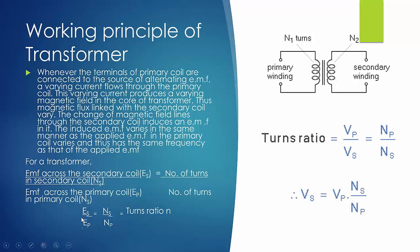For a transformer, the voltage in the secondary divided by the voltage in the primary is equal to the number of turns in the secondary divided by the number of turns in the primary. This ratio is known as the turns ratio: Vs/Vp = Ns/Np.